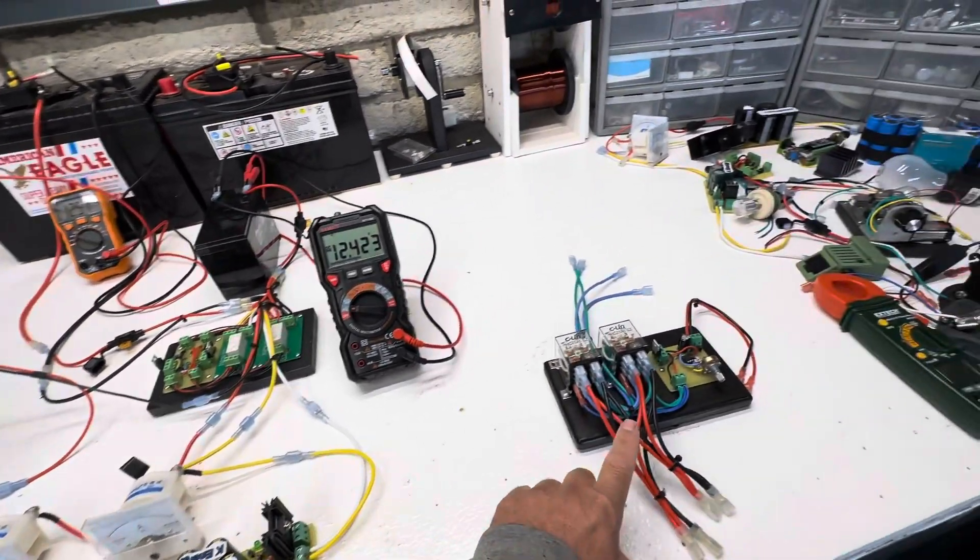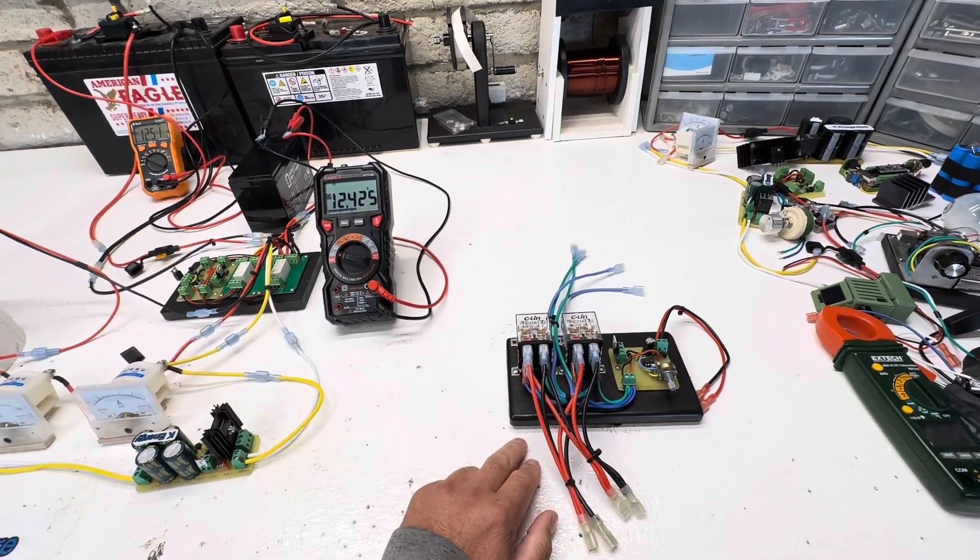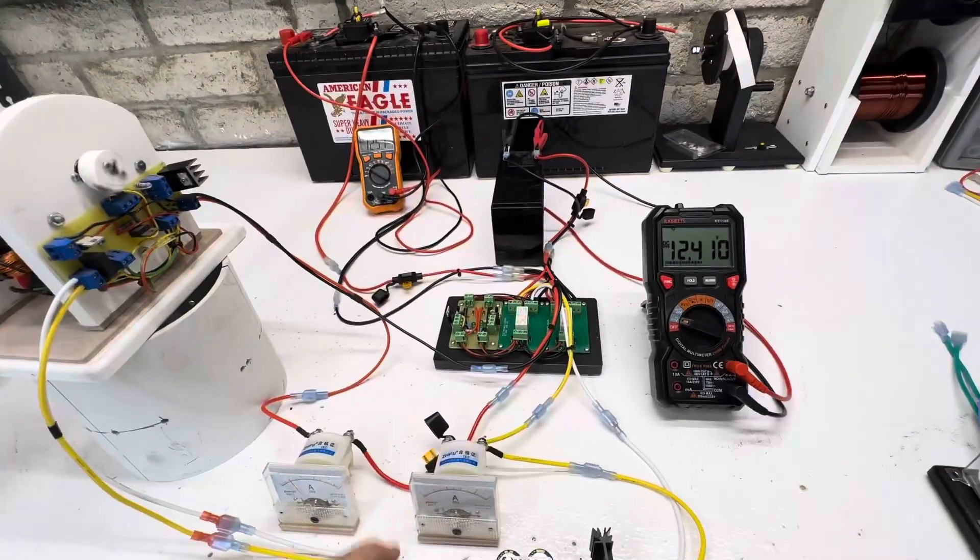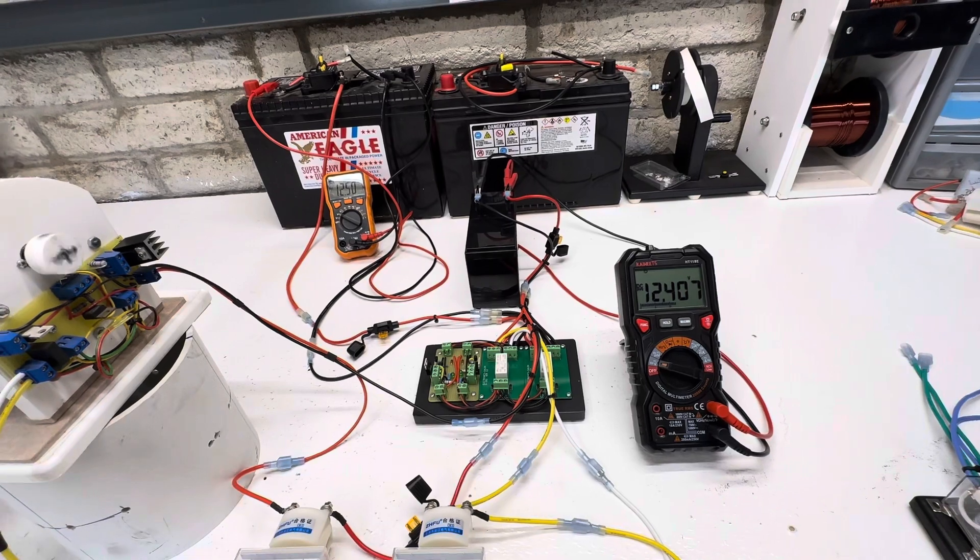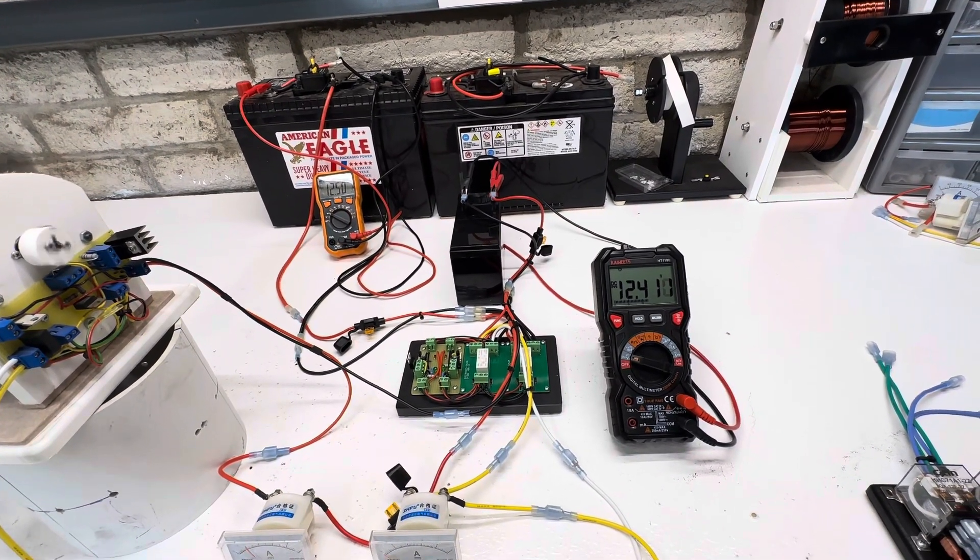Like this one's just time-based, so you could set this one up for minutes or hours. But this one's just set up on voltage only, so right around 12 volts, about 12.1, something like that, it'll switch over.